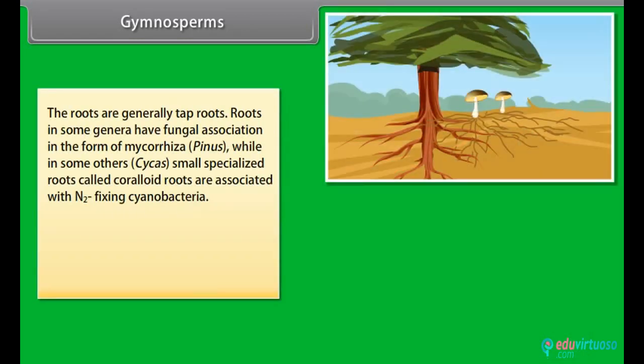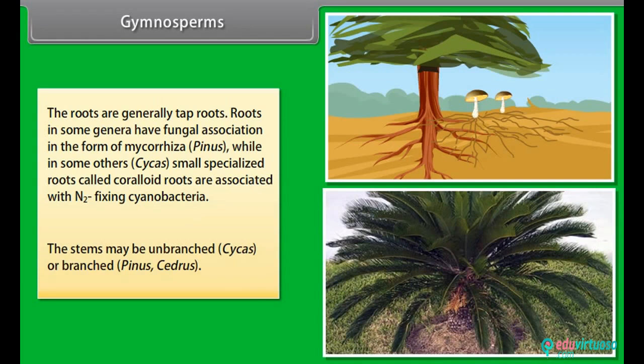The roots are generally tap roots. Roots in some genera have fungal association in the form of mycorrhiza, such as pinus, while in some others, like cycas, small specialized roots called coralloid roots are associated with nitrogen-fixing cyanobacteria. The stems may be unbranched, as in cycas, or branched, as in pinus and cedrus.